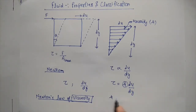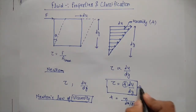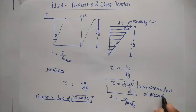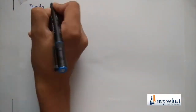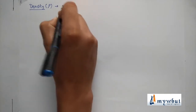Viscosity can be written as shear stress tau divided by velocity gradient du/dy. This equation is known as Newton's law of viscosity. Now let us look at another common property of fluid — density.